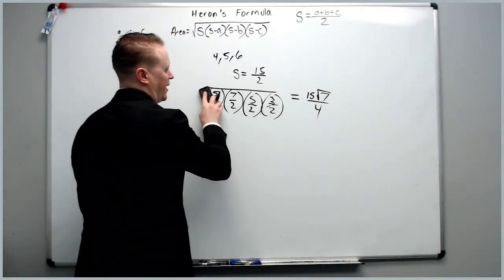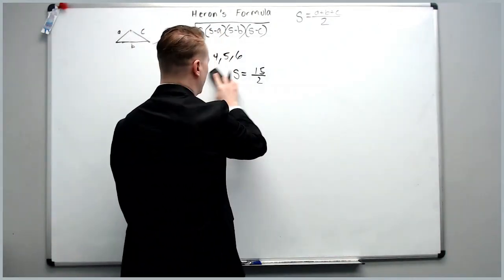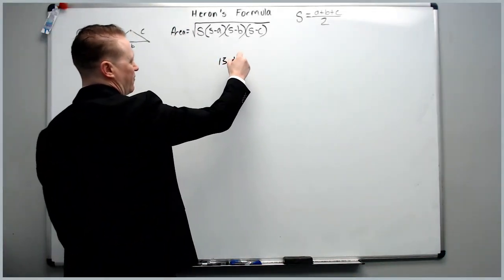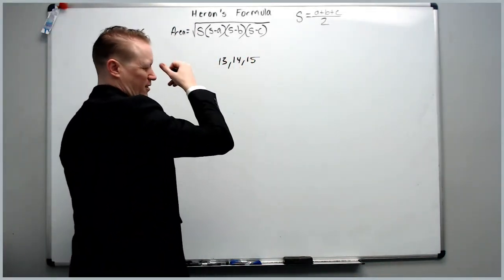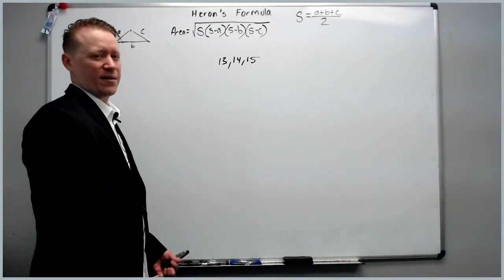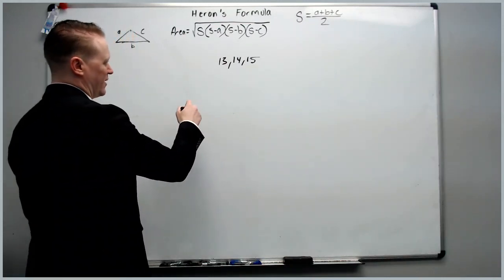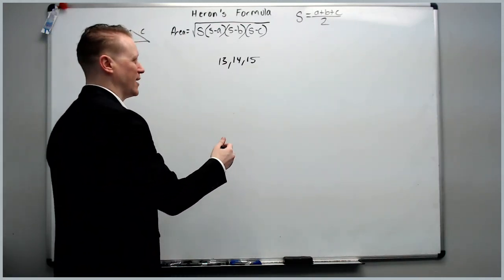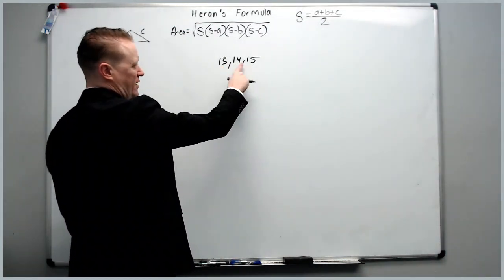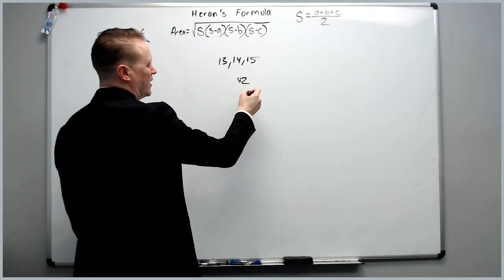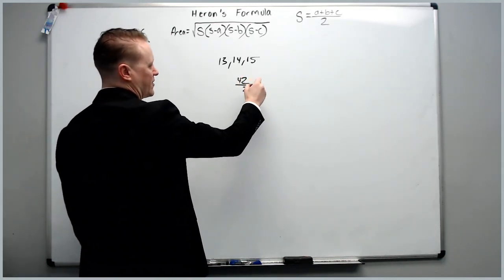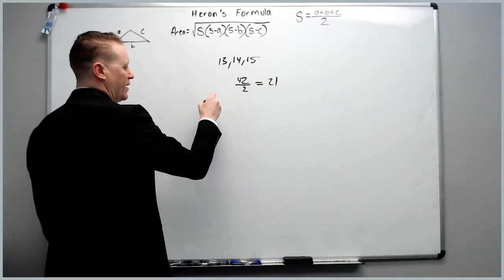Okay, we'll switch it up and do a famous triangle in competition math. A 13, 14, 15. Now, this triangle, you don't need to use Heron's formula for. You'll see it come up in competition math from time to time. So, we add this up. This is like all 14. So, it's 3 times 14 is 42. That's your perimeter. Cut that in half to get your semi-perimeter, which is 21.